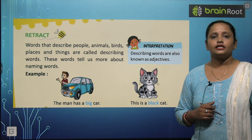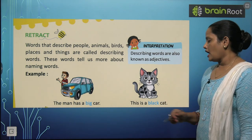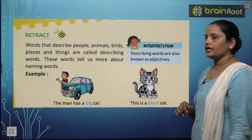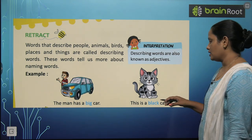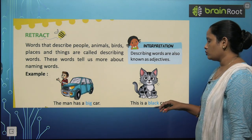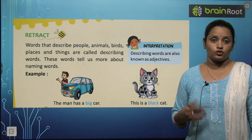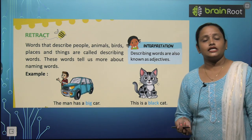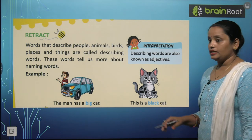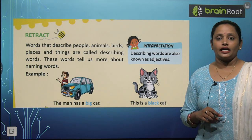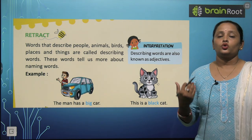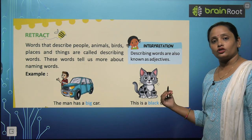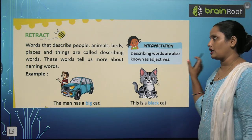Next is: this is a black cat. Yeh ek black cat hai. Toh ab maine puchha, cat kaisi hai? Kyunki cat toh ek naming word hai. Aapne mujhse bola ki yeh ek black cat hai. Toh yahan pe yeh jo black word hai, wo cat ko describe kar raha hai.